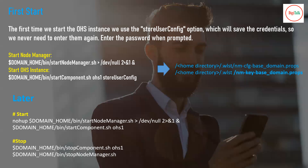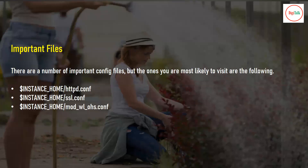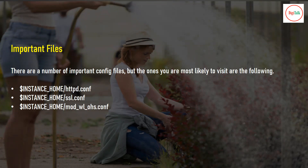There are three important configuration files inside your OHS instance home, similar to Apache. These are: httpd.conf, ssl.conf, and mod_wlohs.conf. All of these files are used for the configuration of the web server with back-end application servers.